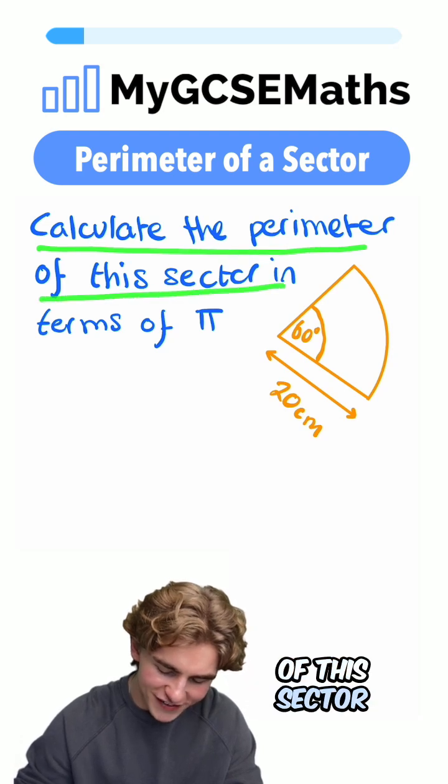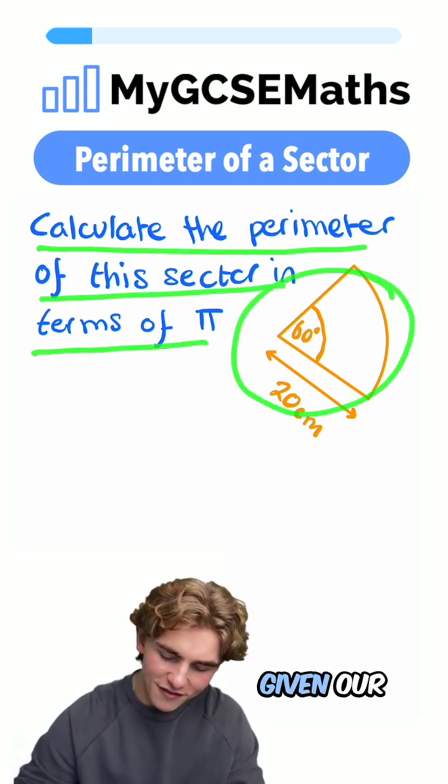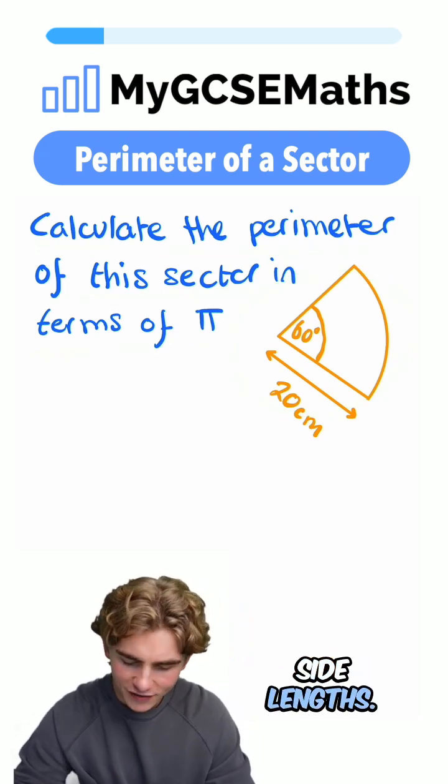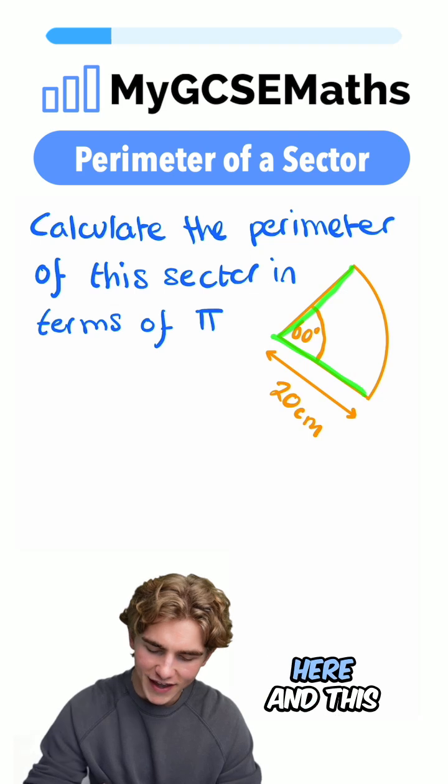Calculate the perimeter of this sector in terms of pi, and we're given our shape over here. We can see that we have three side lengths. We're going to have this side here, this side here, and this side here.